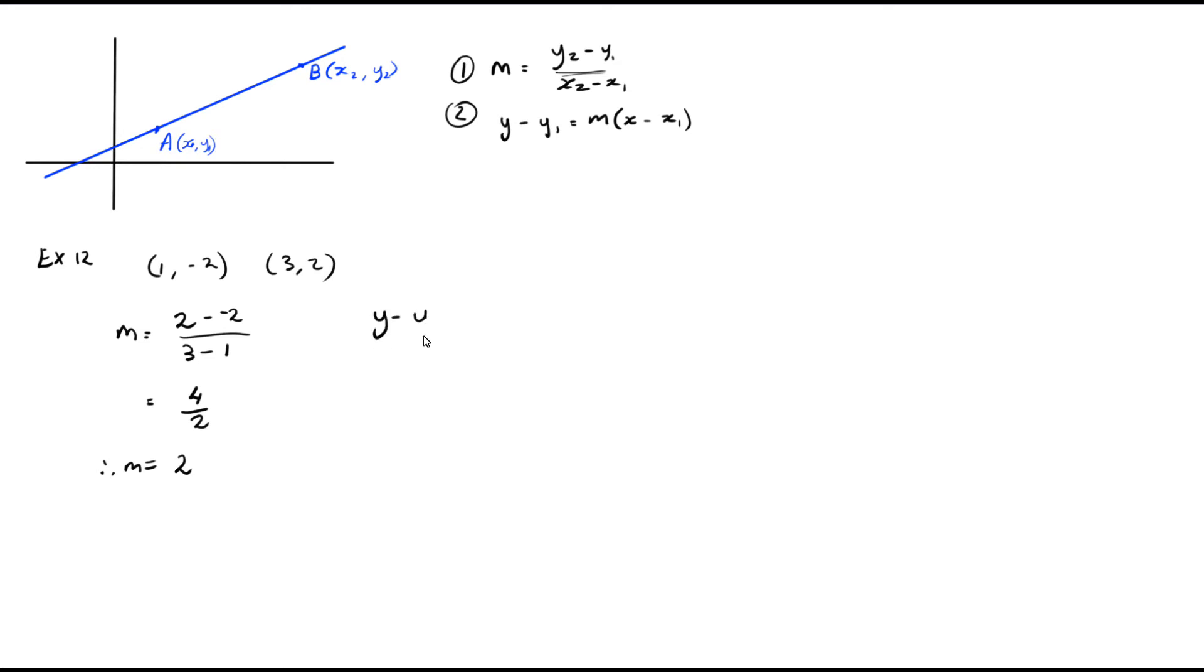Now using our gradient point form we can say y take y1 which was minus 2 equals 2 x take x1 which was 1. And then just subtracting 2 from the y we get 2x take 4. So our equation is y equals 2x take 4.